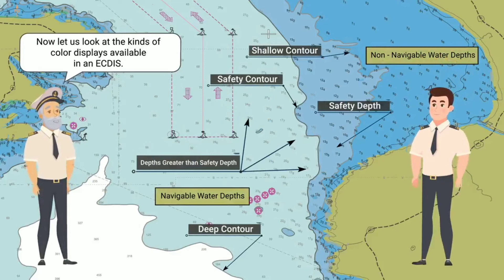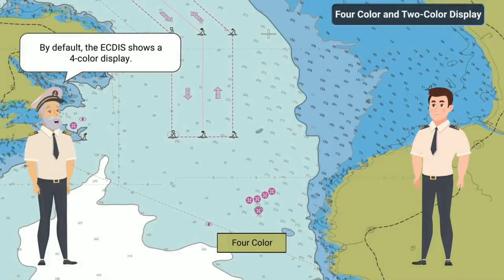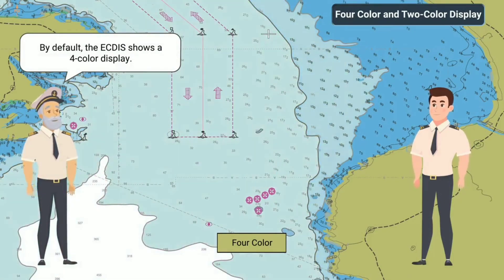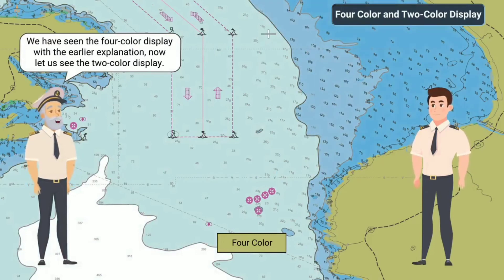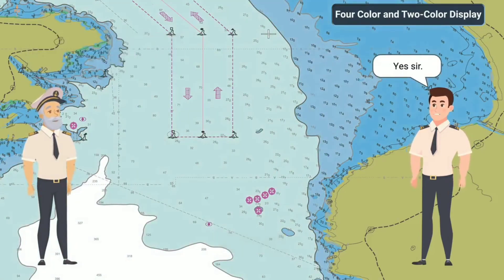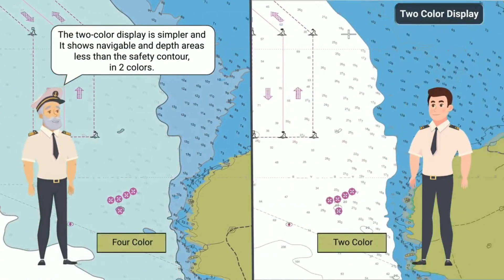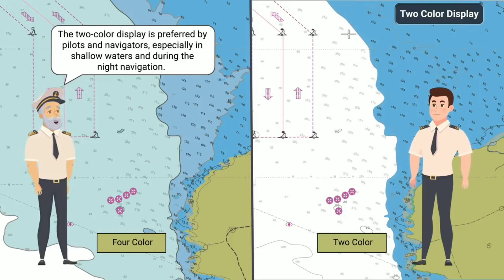Now let us look at the kinds of color displays available in an ECDIS. The ECDIS has two kinds of color settings: two-color and four-color. By default, the ECDIS shows a four-color display. We have seen the four-color display with the earlier explanation; now let us see the two-color display. The two-color display is simpler and shows navigable and depth areas less than the safety contour in two colors. It is preferred by pilots and navigators, especially in shallow waters and during night navigation.